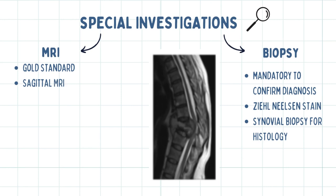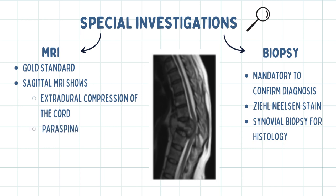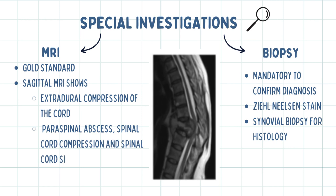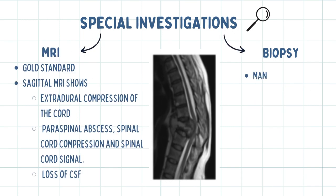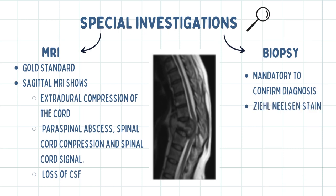MRI remains the mainstay of investigations. Sagittal MRI best shows extradural compression of the cord and confirms the presence of paraspinal abscess, spinal cord compression, and spinal cord signal changes. One may also appreciate the loss of CSF signal. A biopsy is mandatory to confirm diagnosis with the Ziehl-Neelsen stain. Synovial biopsy can show acid-fast bacilli as well as a positive histology for caseating or necrotizing granuloma.